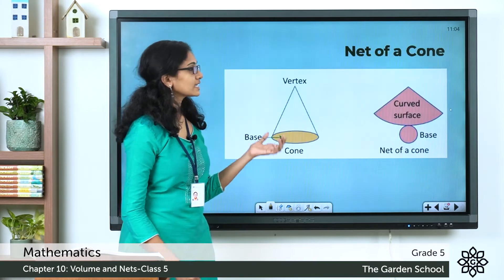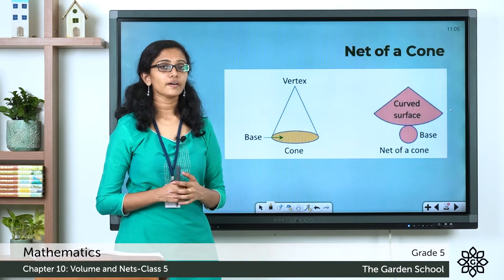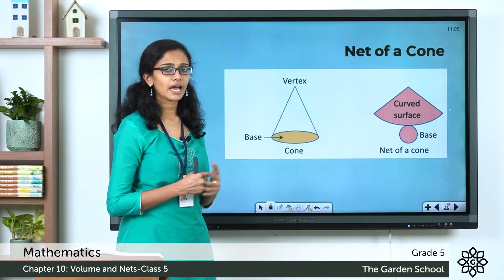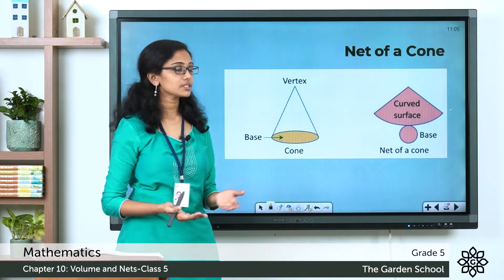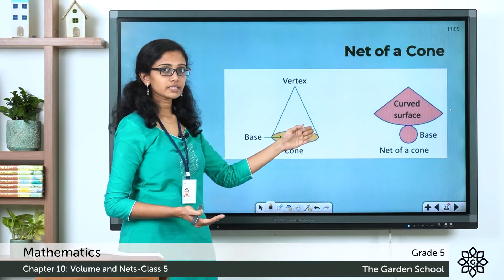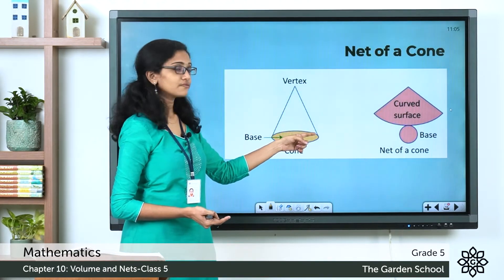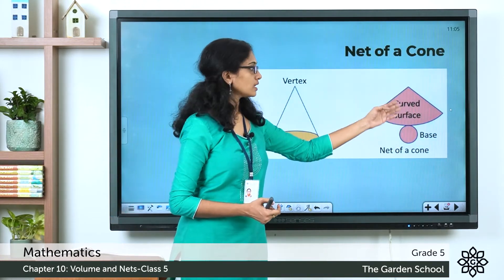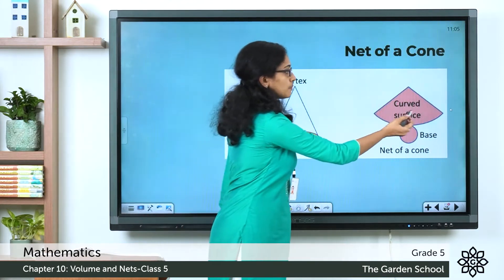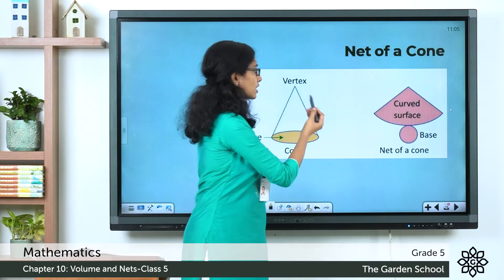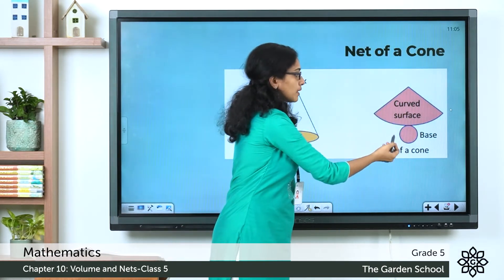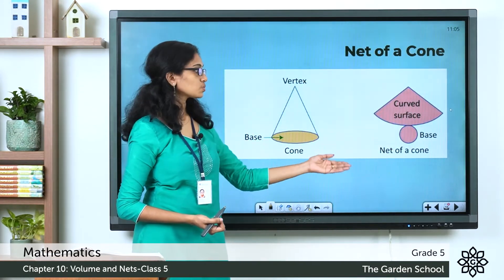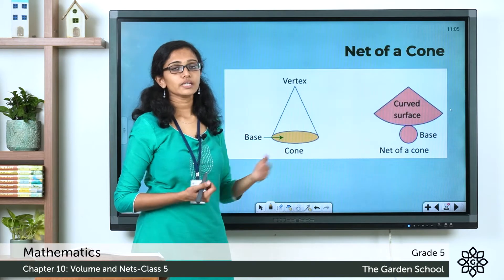Now we'll see the net of a cone. A cone is a solid shape which has got a curved face as well as a flat face. If you cut this cone along the curved face and also cut the flat face along the curved edge, you'll get a net of a cone like this one. This part represents the curved face and this part represents the flat base of the cone. This is what the net of a cone usually looks like.